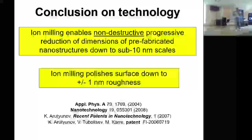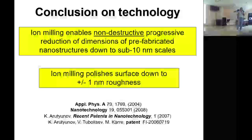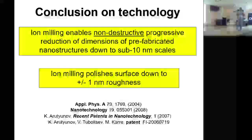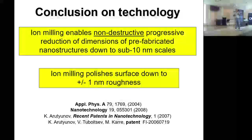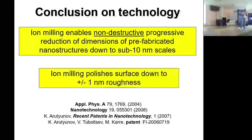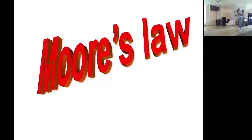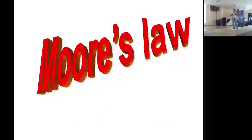Резюмируя эту часть: есть методы изготовления наноструктур сверхмалых размеров, и этот метод позволяет изготавливать структуры с исключительно гладкой ровной поверхностью. Теперь, как и было обещано, от нанотехнологий возвращаемся к микротехнологии.